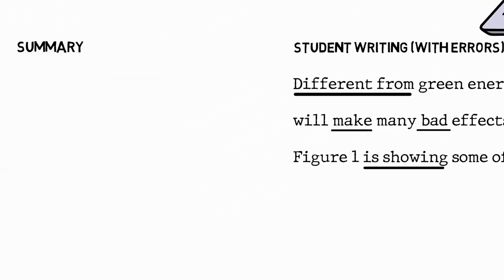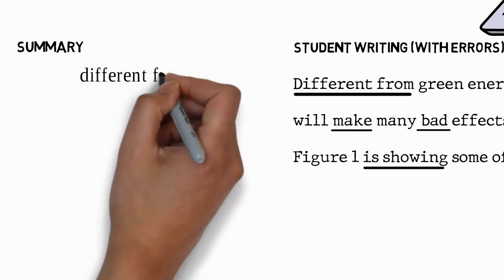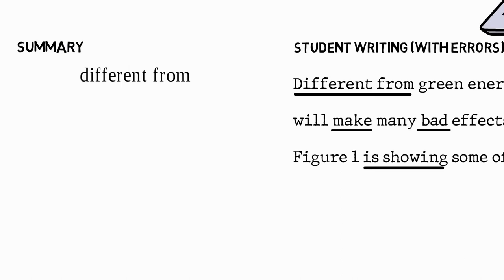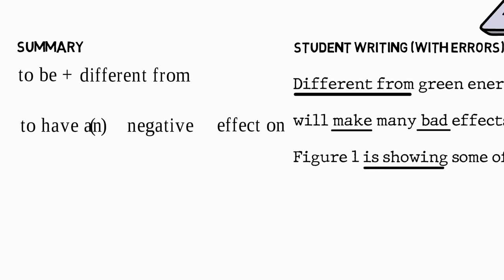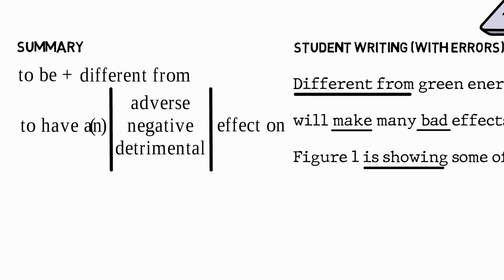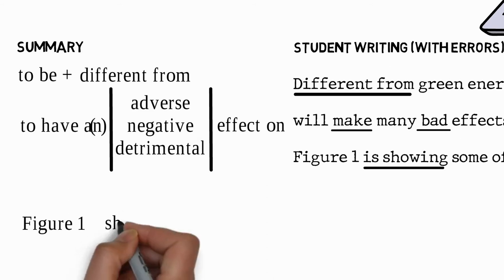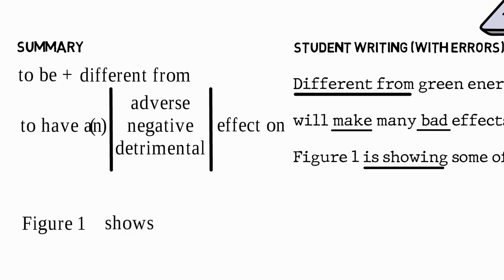Let me now summarize some of the things we've learned. We've seen that 'different from' can't be used at the beginning of a sentence — it combines with the verb 'to be': 'to be different from'. The noun 'effect' goes with the verb 'to have' and the preposition 'on': 'to have an effect on'. 'Bad' is not an academic word — 'negative' is more academic: 'to have a negative effect on'. But 'adverse' and 'detrimental' can also be used: 'to have an adverse effect on', 'to have a detrimental effect on'. And verbs following 'figure one' should use the present simple: 'Figure one shows', 'Figure one illustrates', or 'Figure one depicts'.